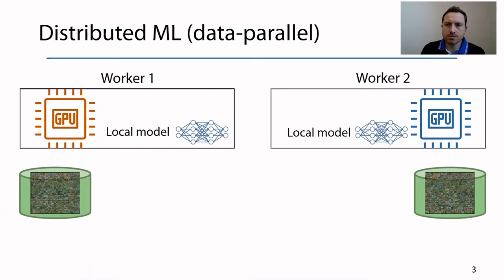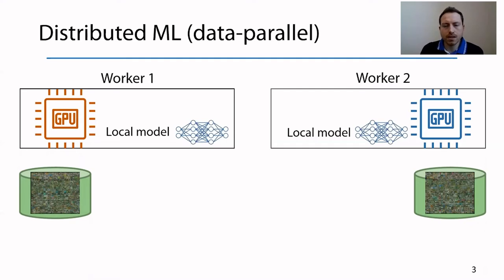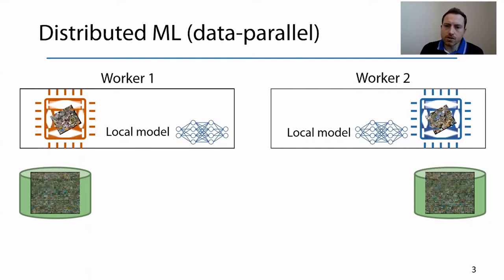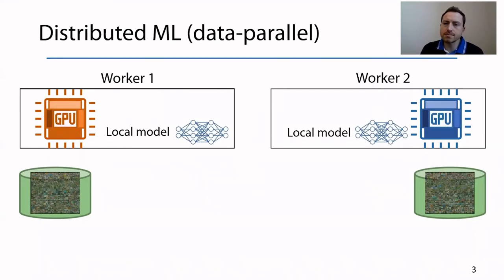Let's first take a look at how distributed machine learning works, assuming data parallel mode. In data parallel mode, the training dataset is divided among all the workers and each worker keeps a local copy of the current model. During one iteration of the training job, each worker goes through a subset of its own dataset. The result of this computation is a model update — one or more large vectors that represent the changes that must be applied to the model parameters to reach a higher accuracy.